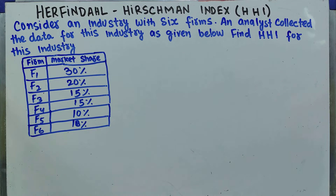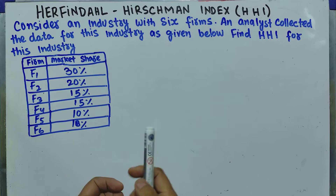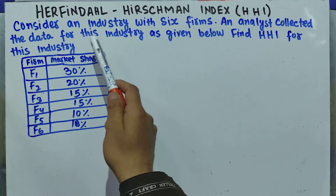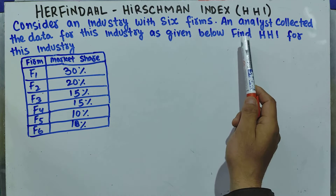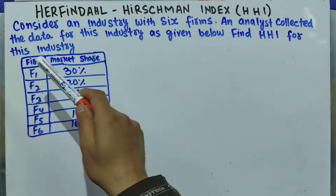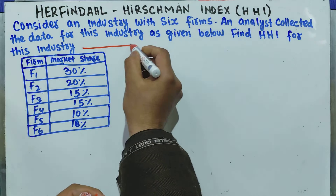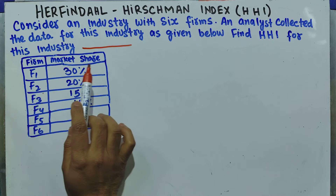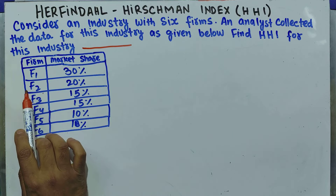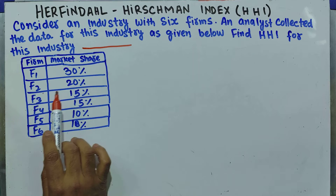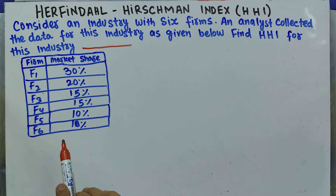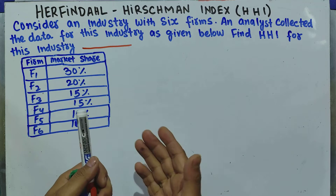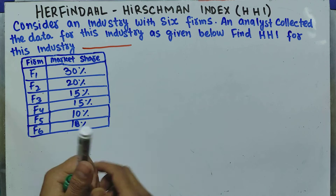In this video we will learn how to calculate the Herfindahl-Hirschman Index. The question is: consider an industry with six firms. An analyst collected the data for this industry, and we have to find out the Herfindahl-Hirschman Index. We are given six firms and their corresponding market shares — firm one has 30%, firm two has 20%, and firm six has a market share of 10%.